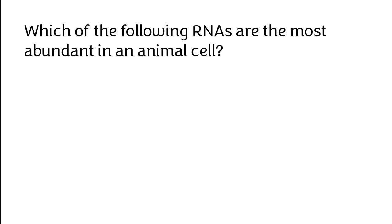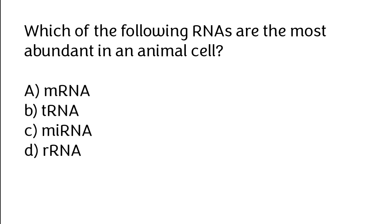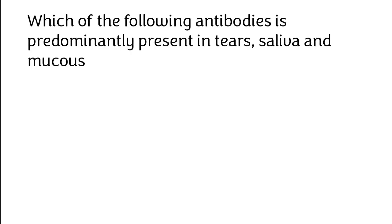Which of the following RNAs are the most abundant in an animal cell? mRNA, tRNA, miRNA, rRNA. The correct answer is option D: rRNA is the most abundant RNA in an animal cell.